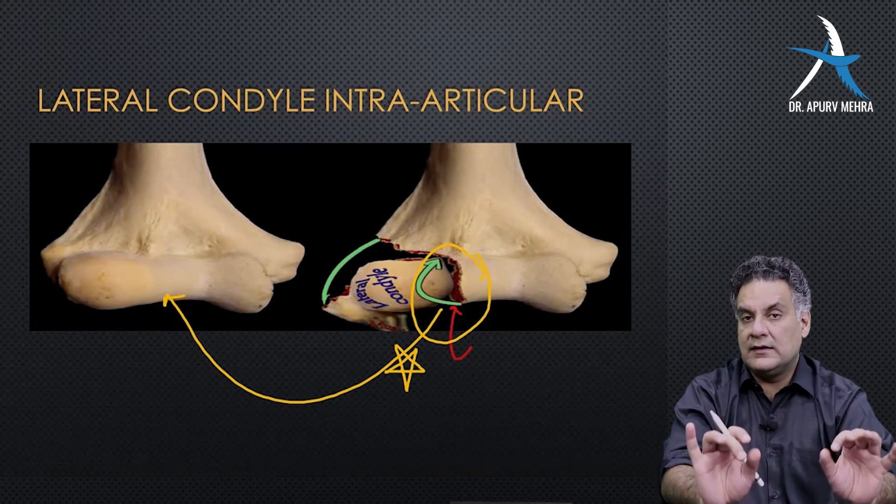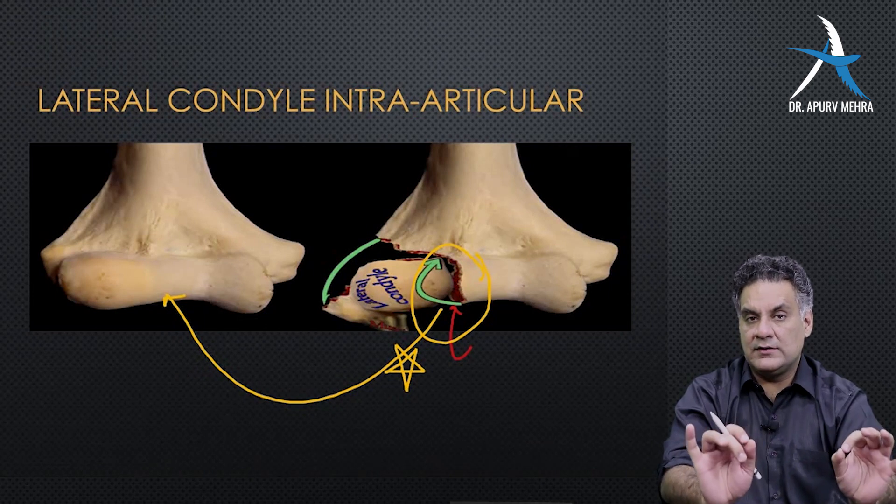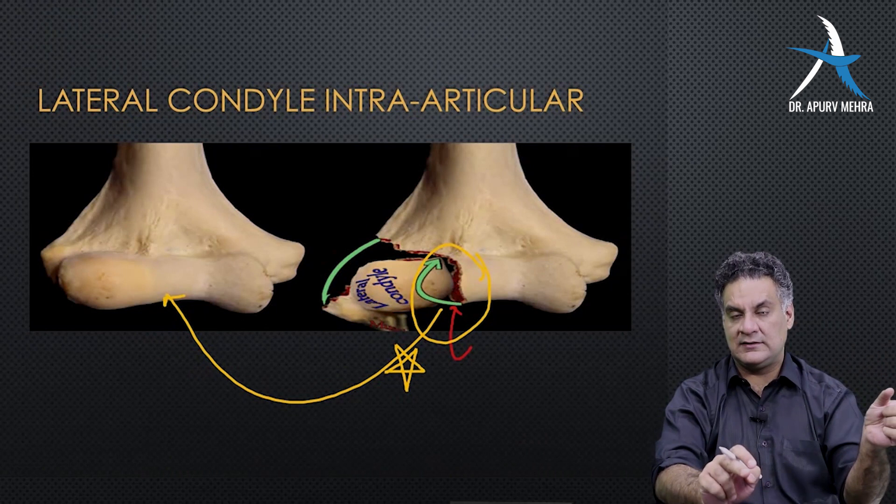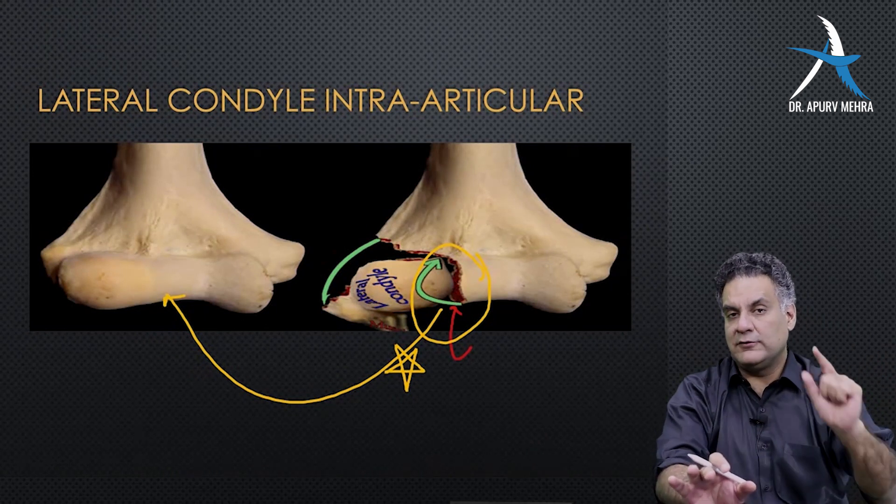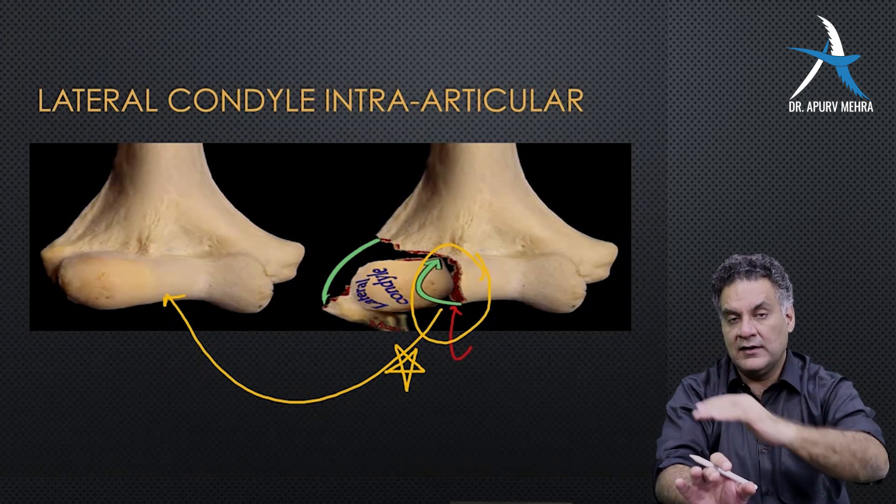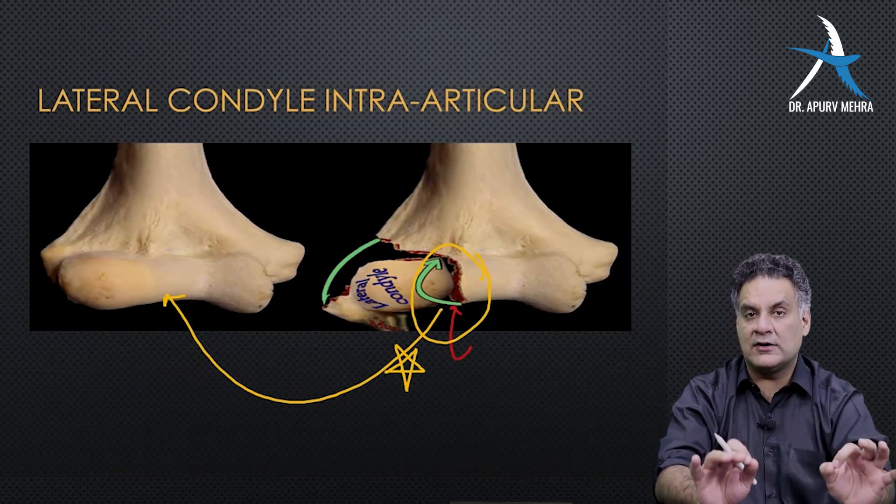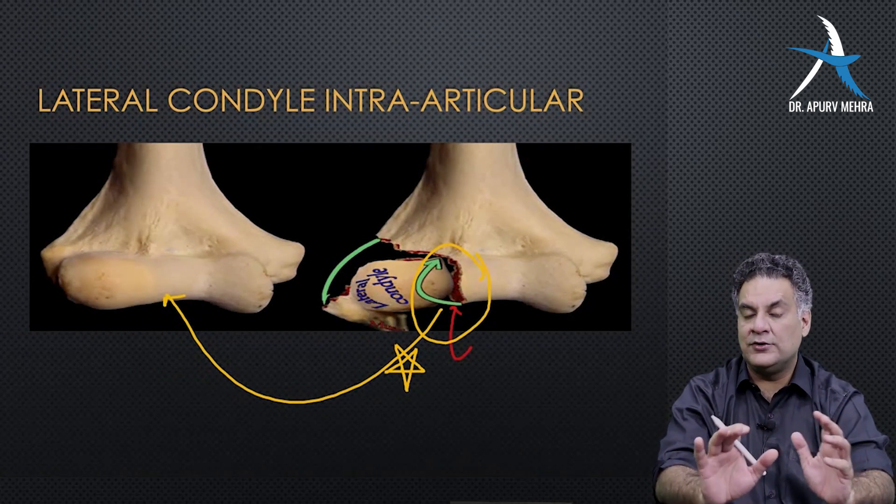Here, you are not worried about the irregularity. You are worried that if there is an irregularity, it will in future lead to arthritis. Even if you lose hematoma, don't worry. You have to finally achieve a smooth surface like a pearl. So, intra-articular fractures: open reduction. Losing hematoma, not a concern.